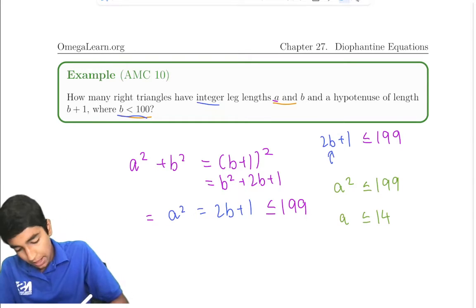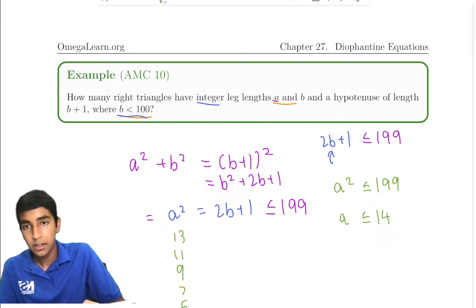For example, we have 13, 11, 9, 7, 5, 3, and so on. And 1, of course.